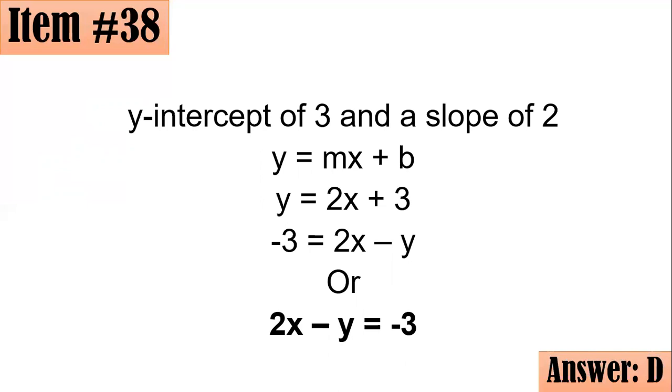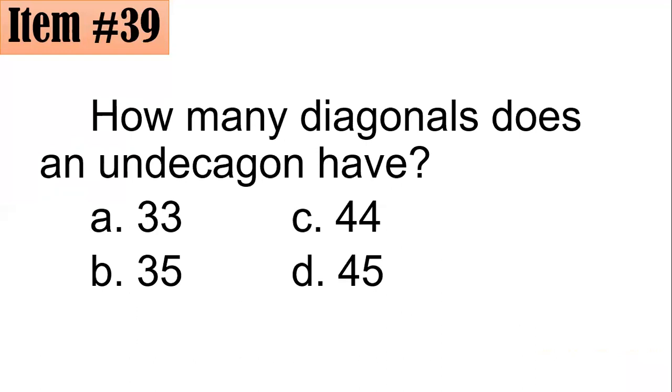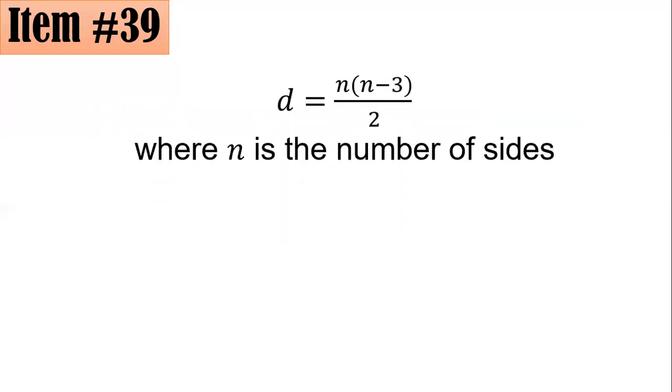Item 39. How many diagonals does an undecagon have? Is it 33, 35, 44, or 45? From here you could actually see that the formula for the number of diagonals is n times n minus 3 all over 2. I hope you could recall that.